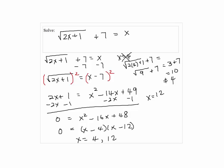If x equals 12, then 2 times 12 plus 1 plus 7 equals the square root of 25 plus 7, which is 5 plus 7, which is 12. So 12 works. So the answer is only 12.